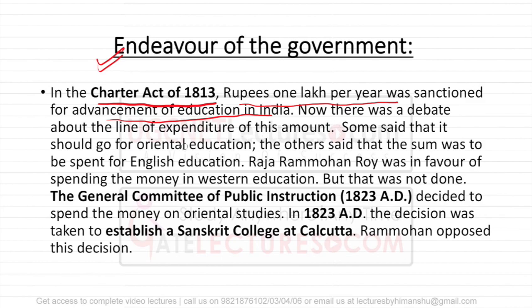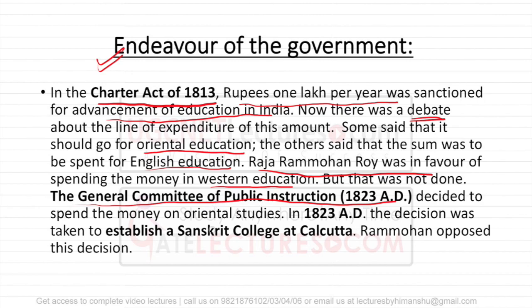Now came the conflict and debate about how to spend the money. Some people wanted Oriental education — traditional Indian education — while others wanted English education. Raja Ram Mohan Roy was a supporter of Western education. The General Committee of Public Instructions was formed, and they decided to initially spend the money on Oriental education, establishing Sanskrit College at Calcutta.